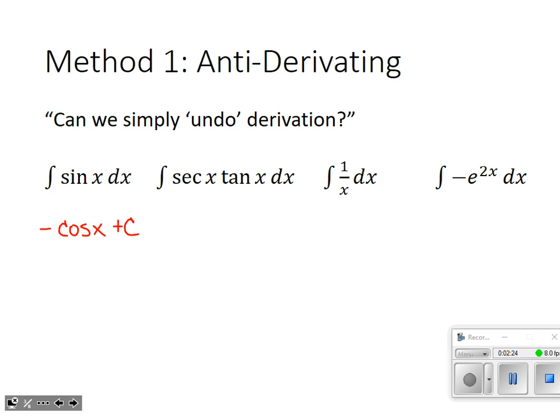The next example: the integral of secant x tangent x. If we differentiate a secant function, that leads directly to secant x tangent x. So to undo that derivation, we head back to secant x. We have the possibility that there was a constant that differentiated away to zero, so we mark that place with plus c.